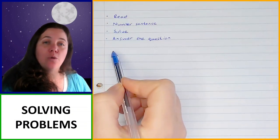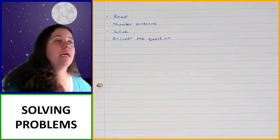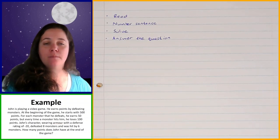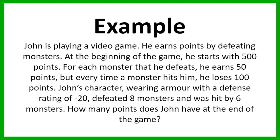Those are the steps you're going to follow while solving the questions. Now let's have a look at our first example. John is playing a video game and earns points by defeating monsters. At the beginning of the game, he starts with 500 points. For each monster that he defeats, he earns 50 points, but every time a monster hits him, he loses 100 points. John's character, wearing armor with a defense rating of negative 20, defeats 8 monsters and was hit by 6 monsters. How many points does John have at the end of the game?